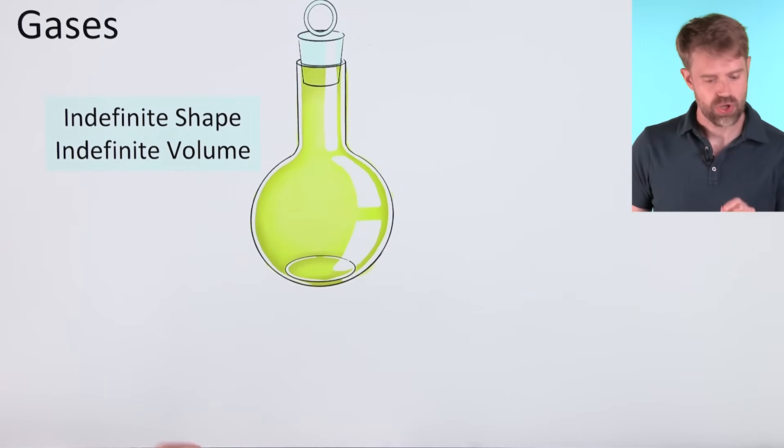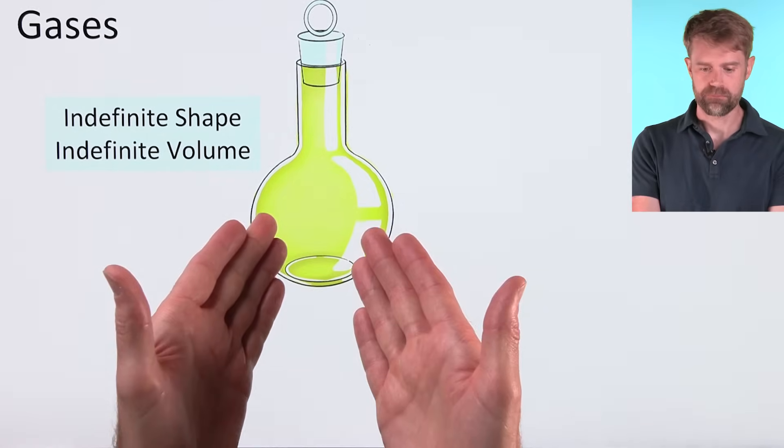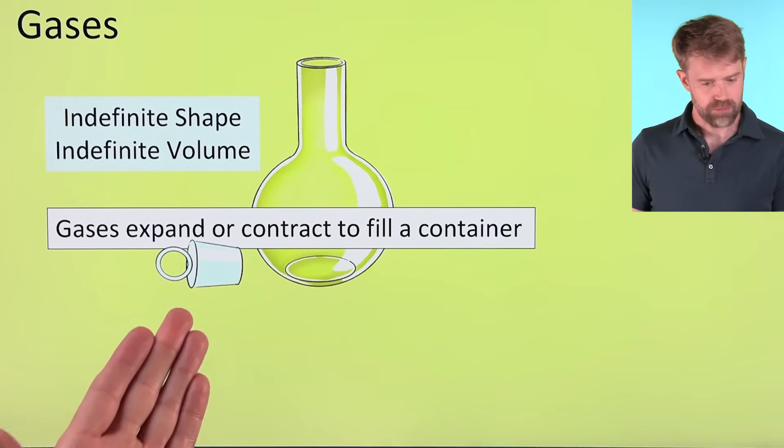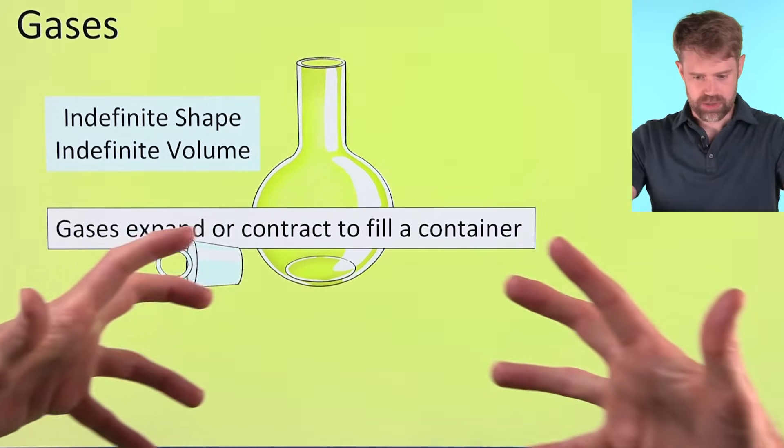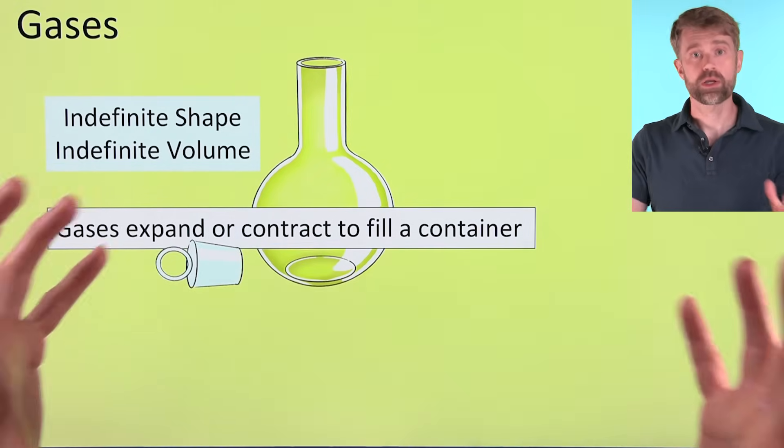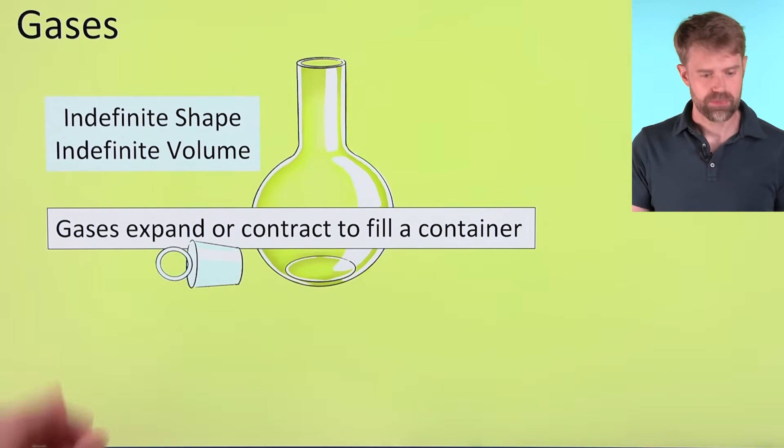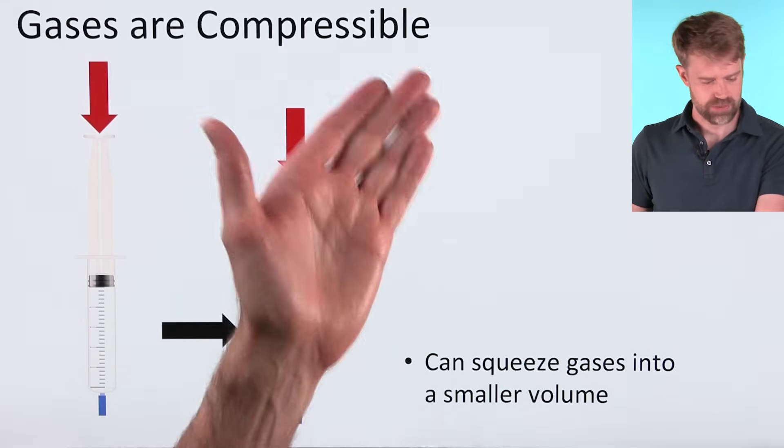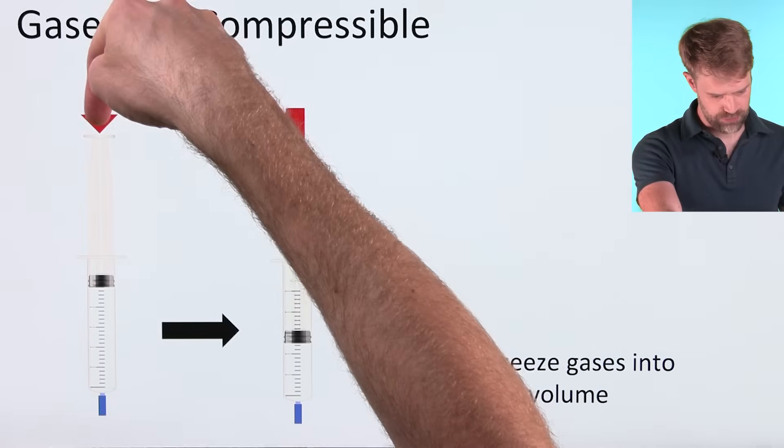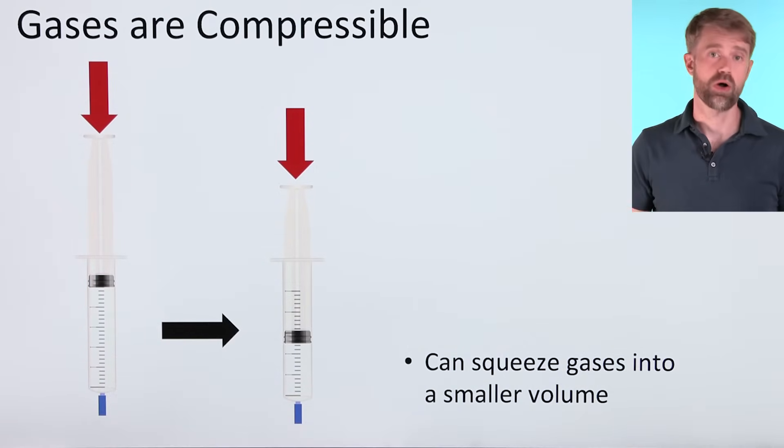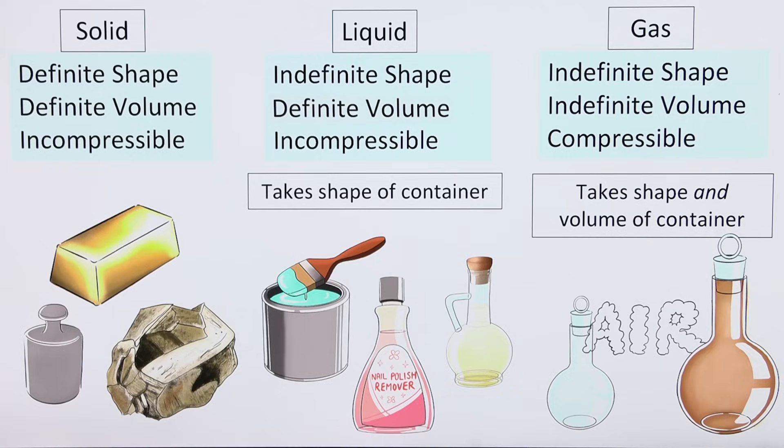But the volume of gas also changes. Right now, the gas is taking up the volume of this flask. But if we removed the top, the gas would expand. It would come out to fill up a larger volume. Gases can expand or contract to fill a container. That's why the volume is also indefinite. Unlike the other two phases of matter that we talked about, gases are indeed compressible. In a situation like this, you exert some force on the top of this syringe and it compresses the gas. You can squeeze it into a smaller volume. This is a summary of those characteristics.